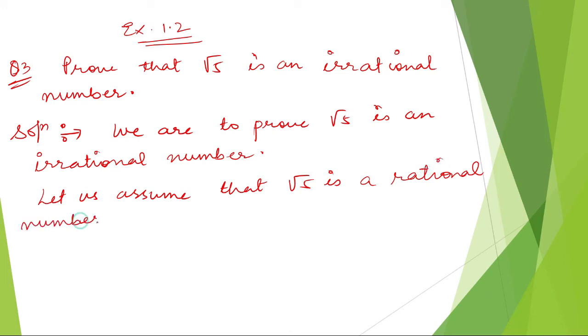If our assumption is wrong, then we have proved that root 5 is an irrational number. Since it is assumed to be a rational number, a rational number can be written in the form of P by Q. So P by Q is equal to root 5.